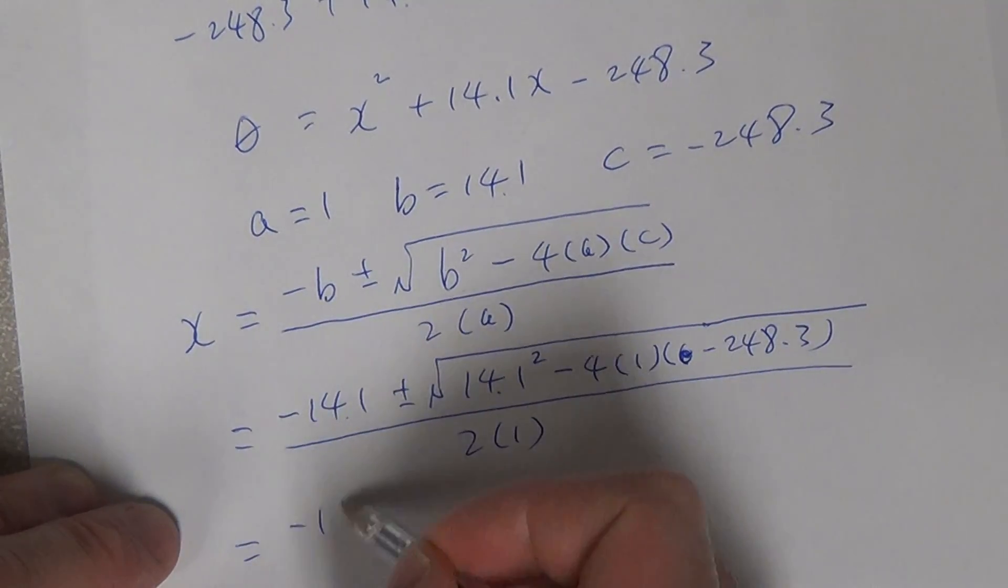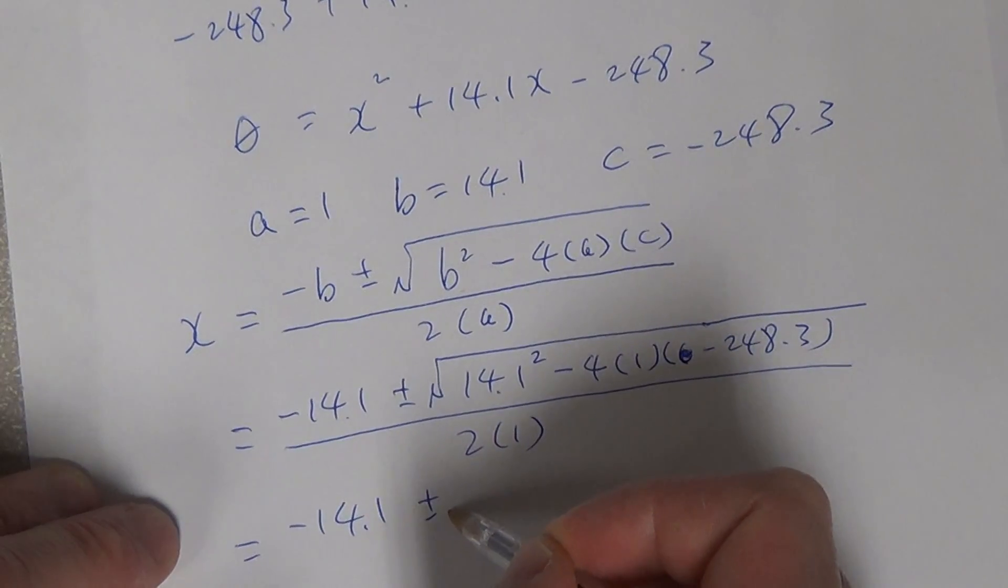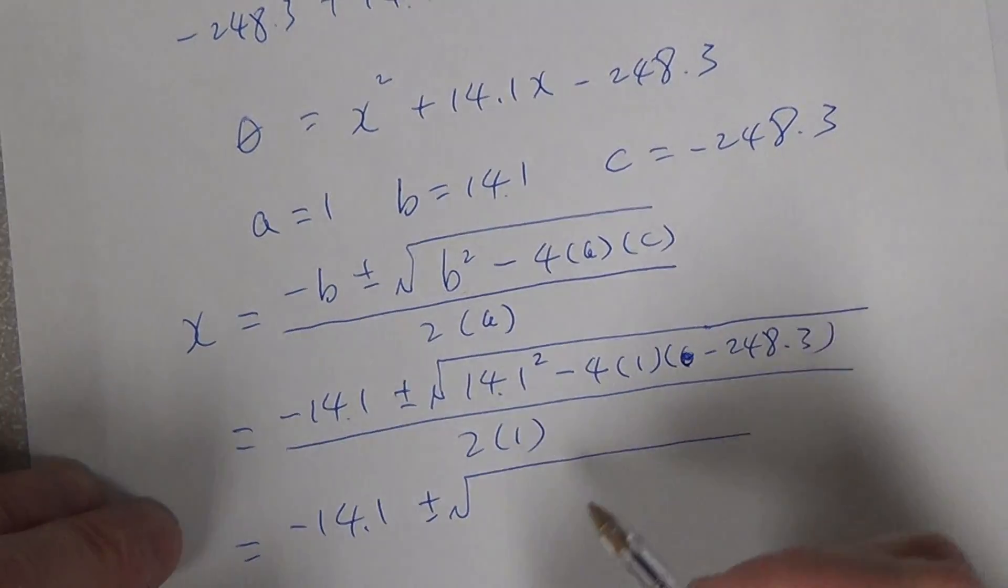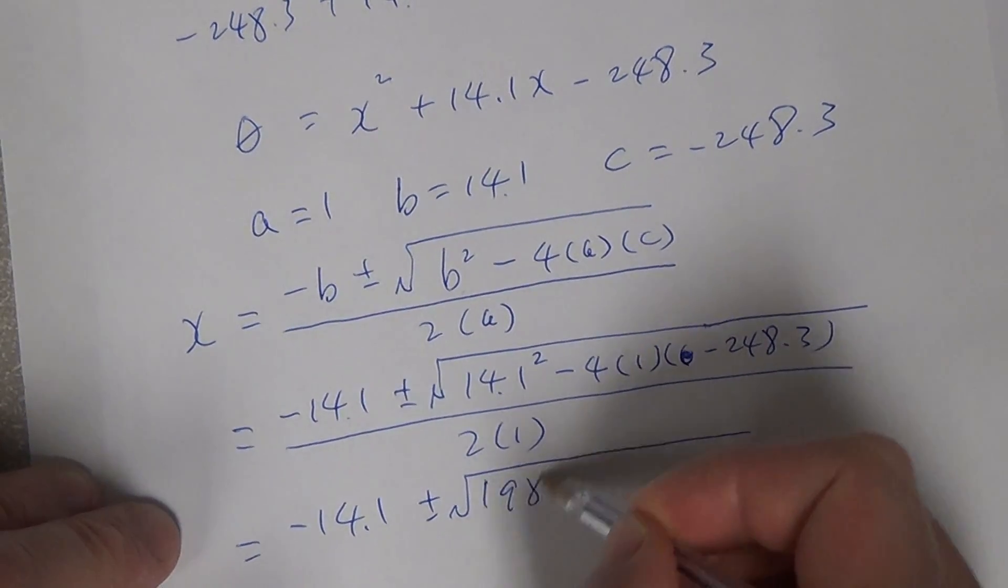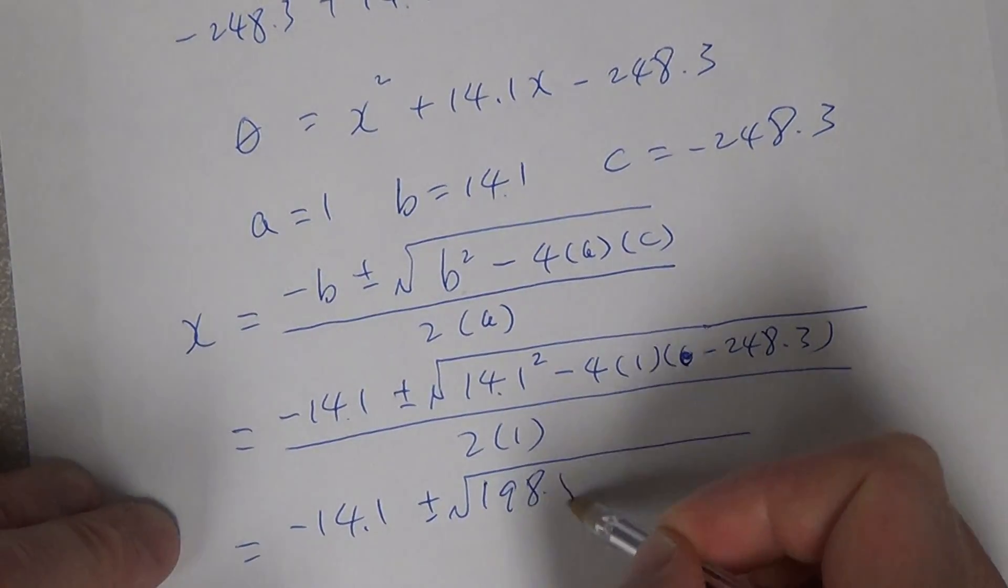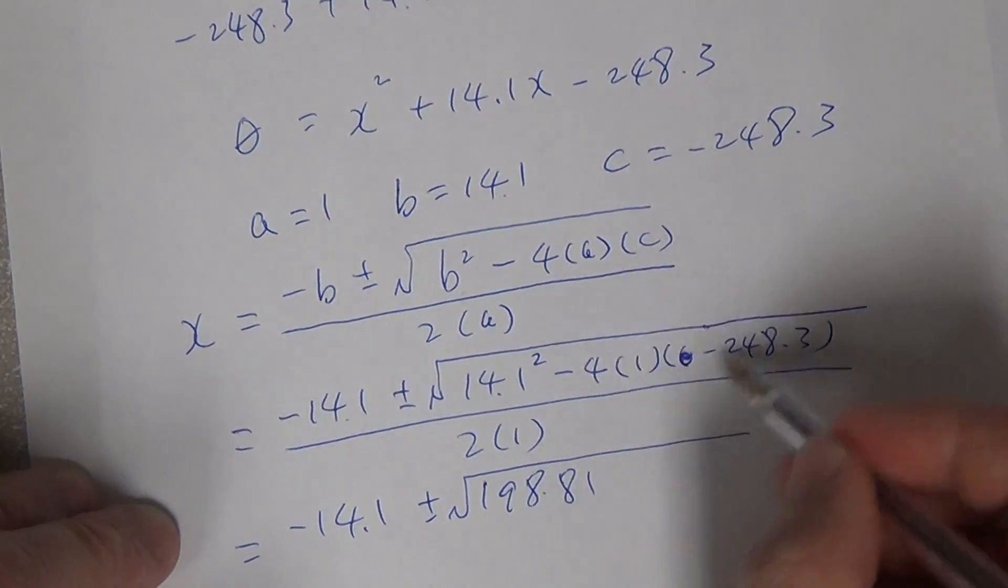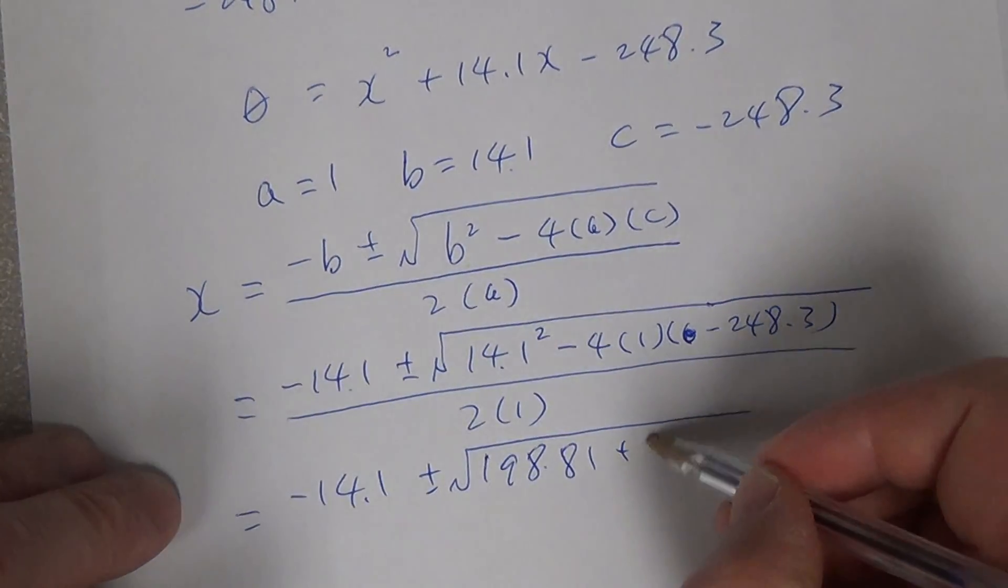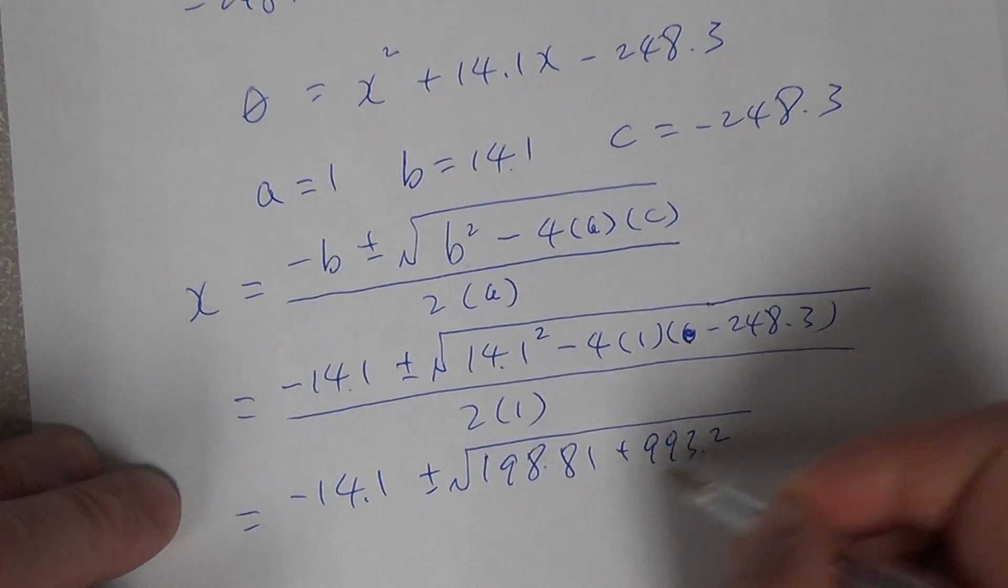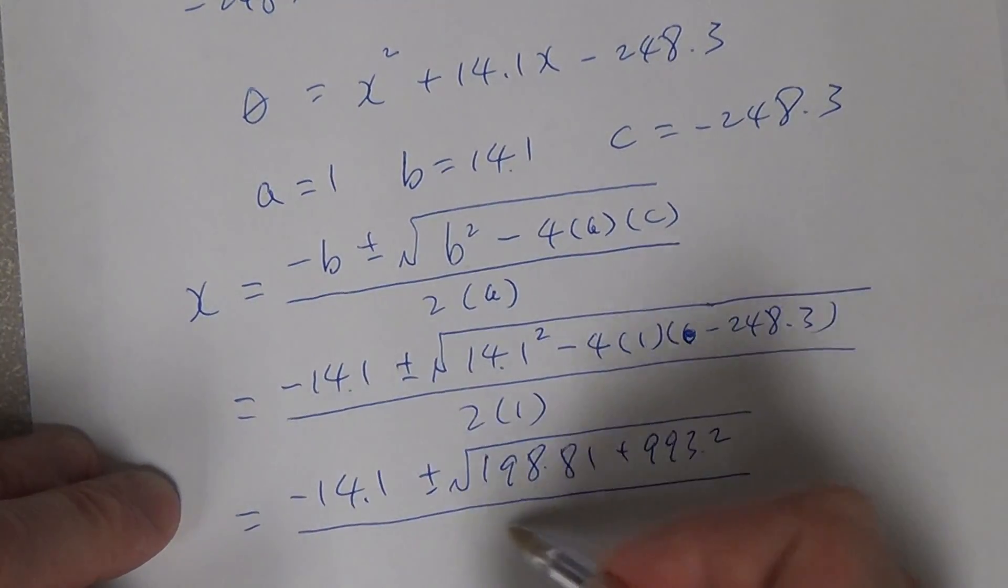So negative 14.1 plus minus, we do the calculation for the numbers inside. So 198.81 minus, minus becomes plus, plus 993.2 divided by 2 times 1 becomes 2.